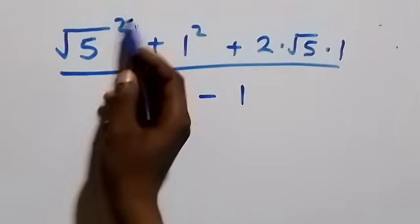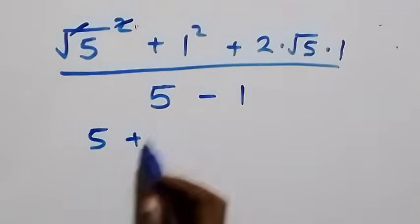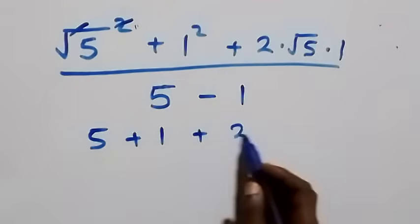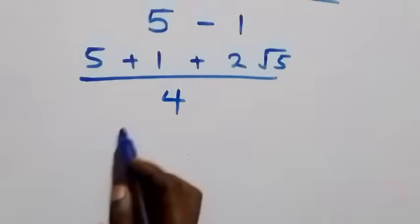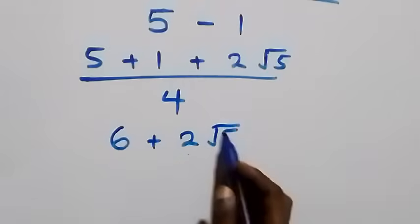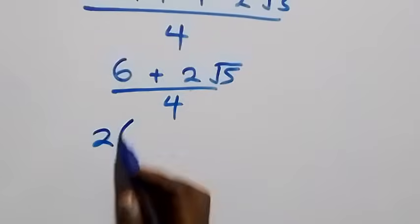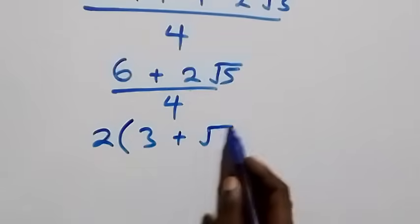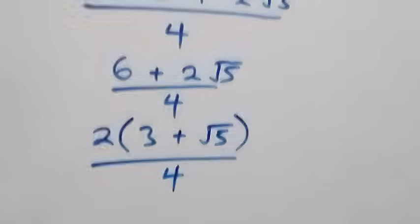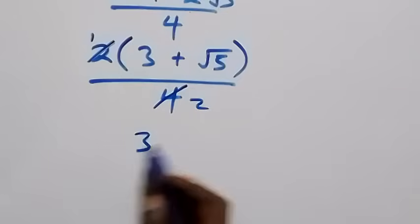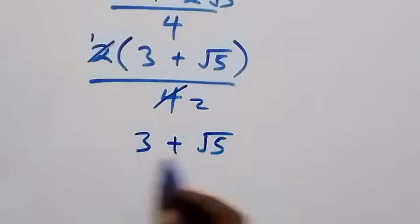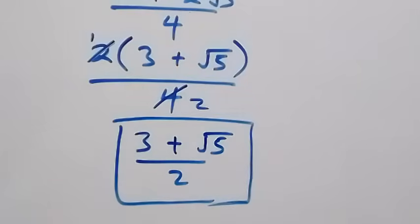The square cancels the square root, giving us five, then minus one squared is one, so denominator is four. The numerator gives us five plus one squared which is one, plus two root five, over four. That is five plus one equals six, plus two root five, over four. Factoring out two: two times bracket three plus root five, over four, which simplifies to three plus root five over two.